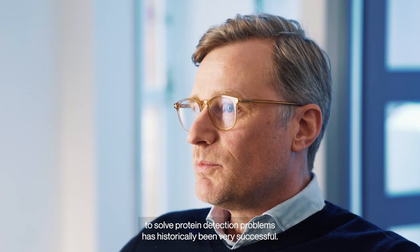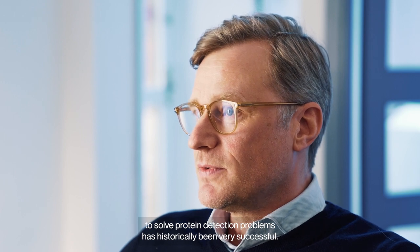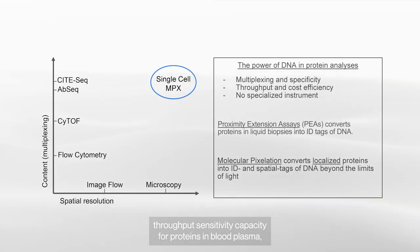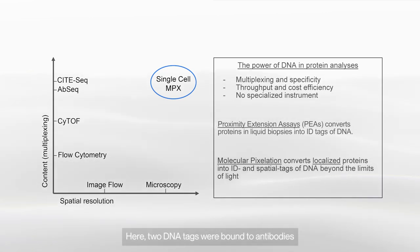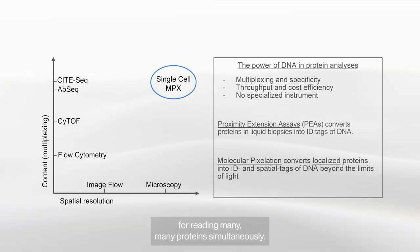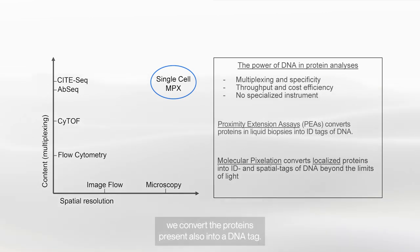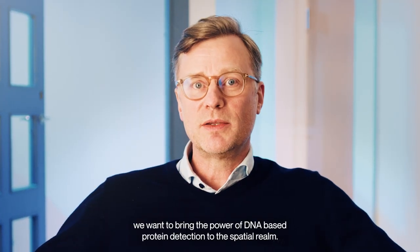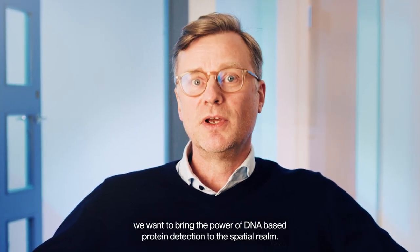Using DNA to solve protein detection problems has historically been very successful. Most notably, the proximity extension assay was developed to drive throughput, sensitivity, and capacity for proteins in blood plasma, which are not localized. Two DNA tags were bound to antibodies that, upon pairwise recognition, gave a DNA-based signal for reading many proteins simultaneously. In our method, molecular pixelation, we convert the proteins present into a DNA tag, but this DNA tag also includes the spatial location of proteins. With PixelGen, we want to bring the power of DNA-based protein detection to the spatial realm.